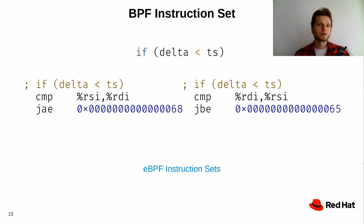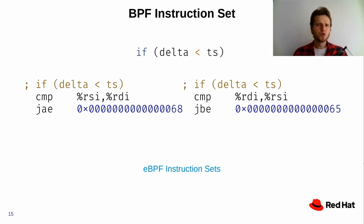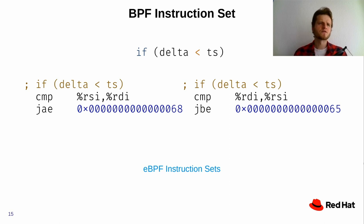BPF instruction sets are not common knowledge, so that's why I'm covering this. Since BPF has been evolving in the kernel over a long time, there are several supported instruction sets. If you compile your program targeting a newer instruction set, you'll have access to a more diverse set of instructions. Some crucial instructions are missing from the default version one instruction set due to compatibility issues, especially with classical BPF.